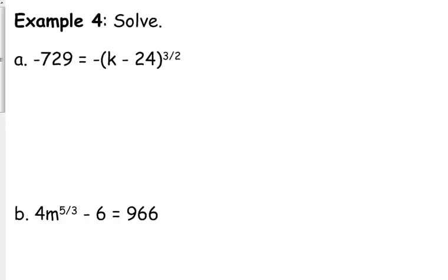So we've got negative 729 is equal to negative k minus 24 to the 3 halves. I will reiterate this one more time: you cannot distribute that negative into those parentheses. So our first step is to divide both sides by negative 1. We get positive 729 is equal to k minus 24 to the 3 over 2.